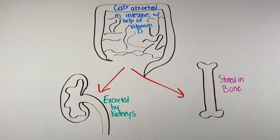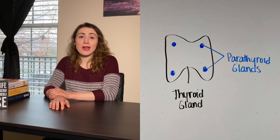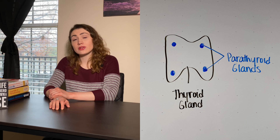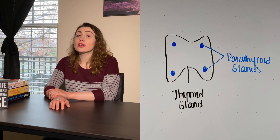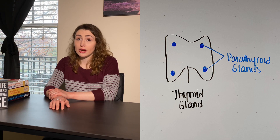Calcium enters the body through the GI tract and is absorbed through the intestines. In order for calcium to be absorbed, vitamin D must be present. After calcium is absorbed, it is stored in the bones or excreted by the kidneys. The parathyroid glands are little endocrine glands located on the back of the thyroid, and their primary purpose is to secrete parathyroid hormone.